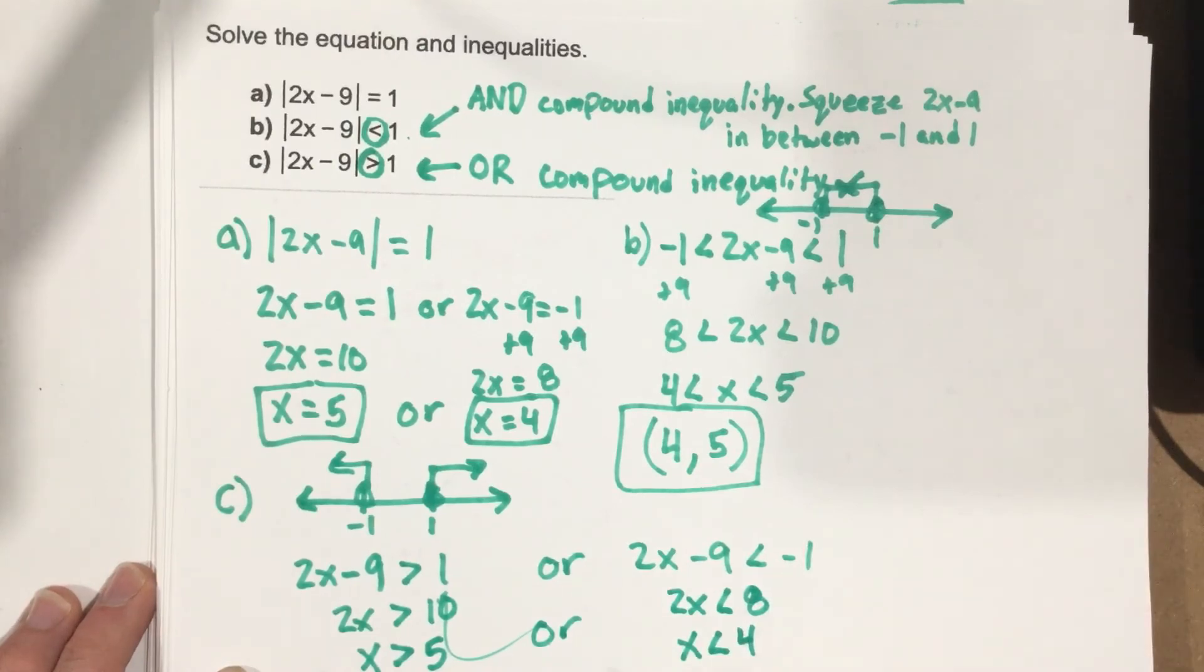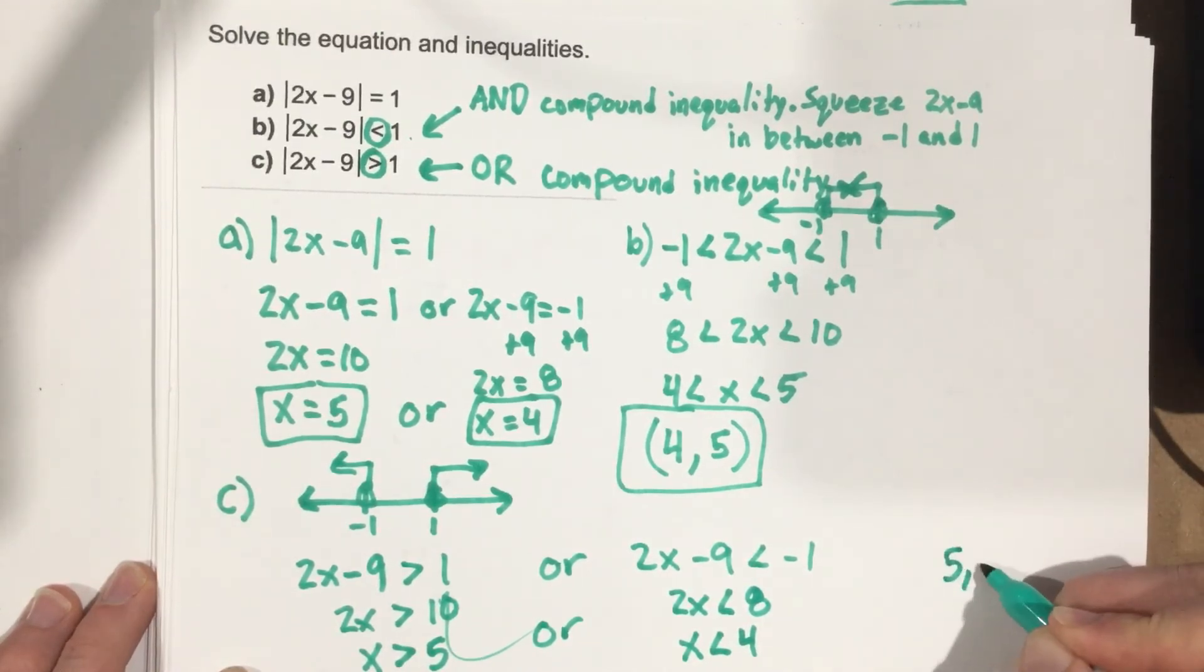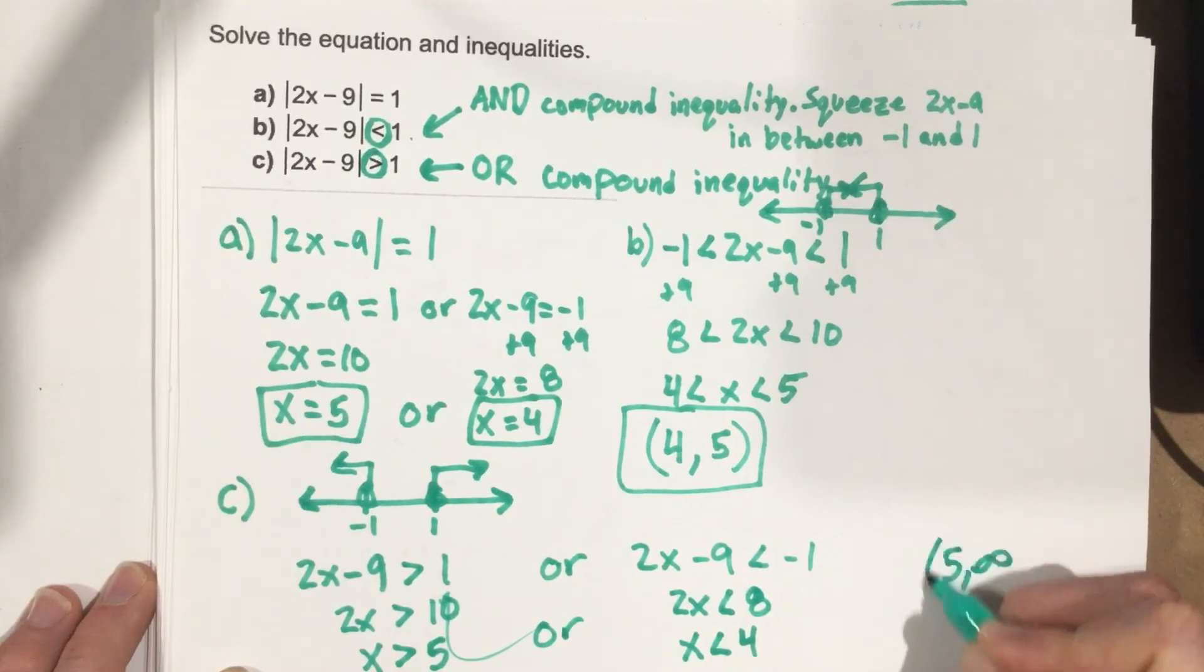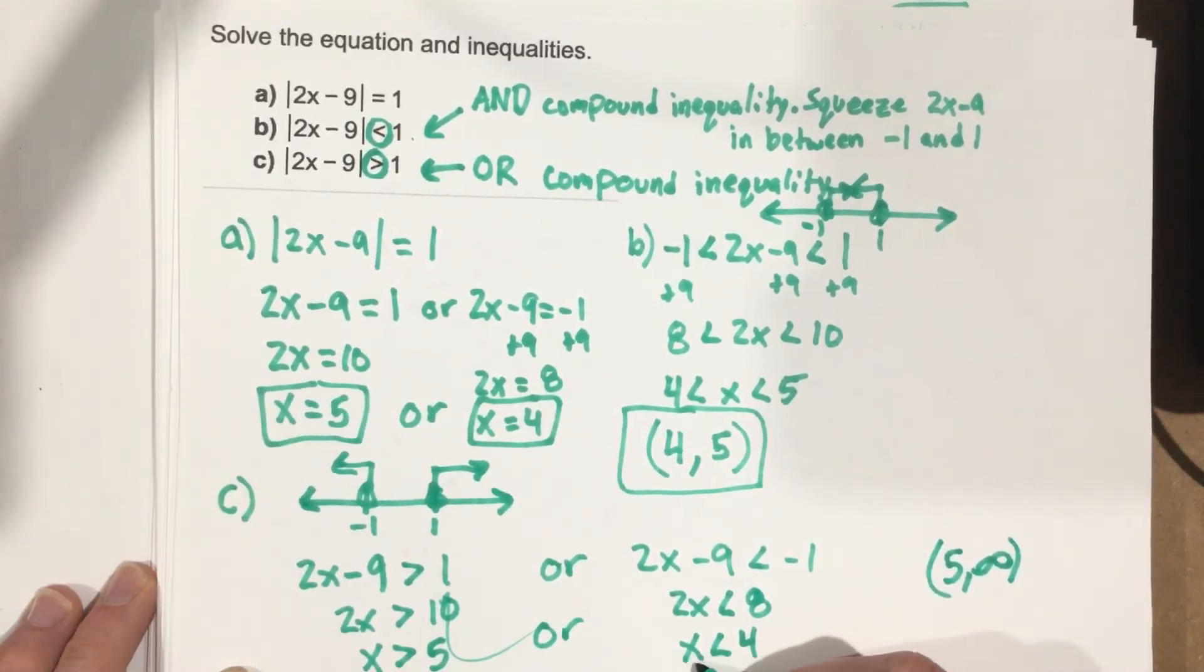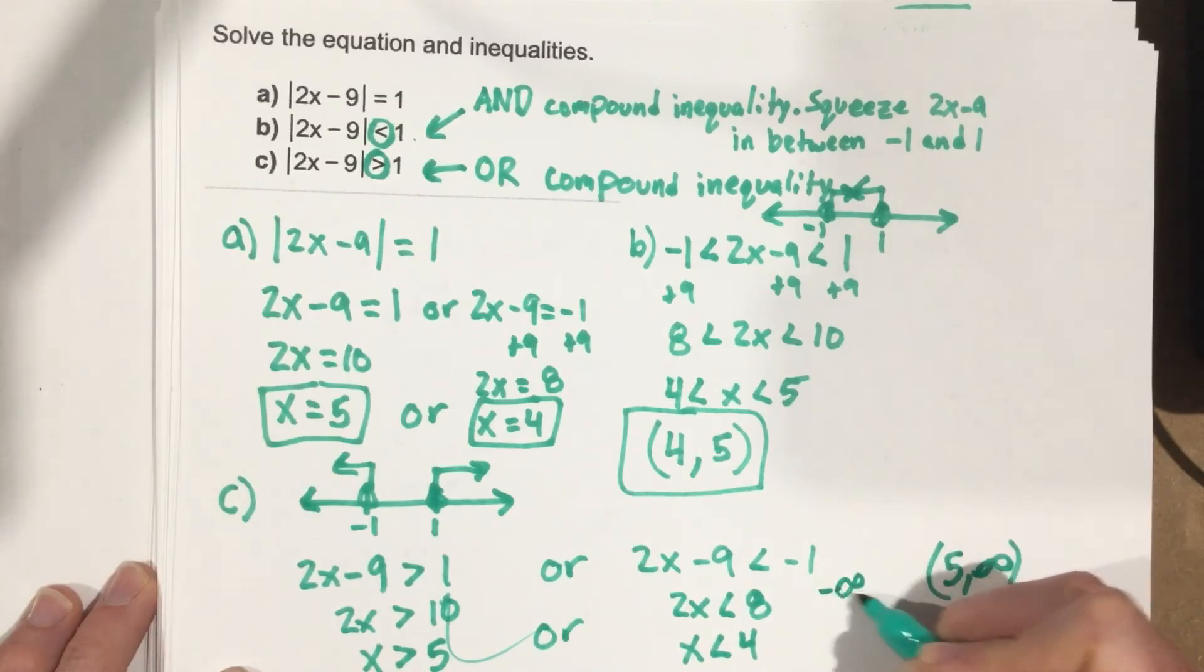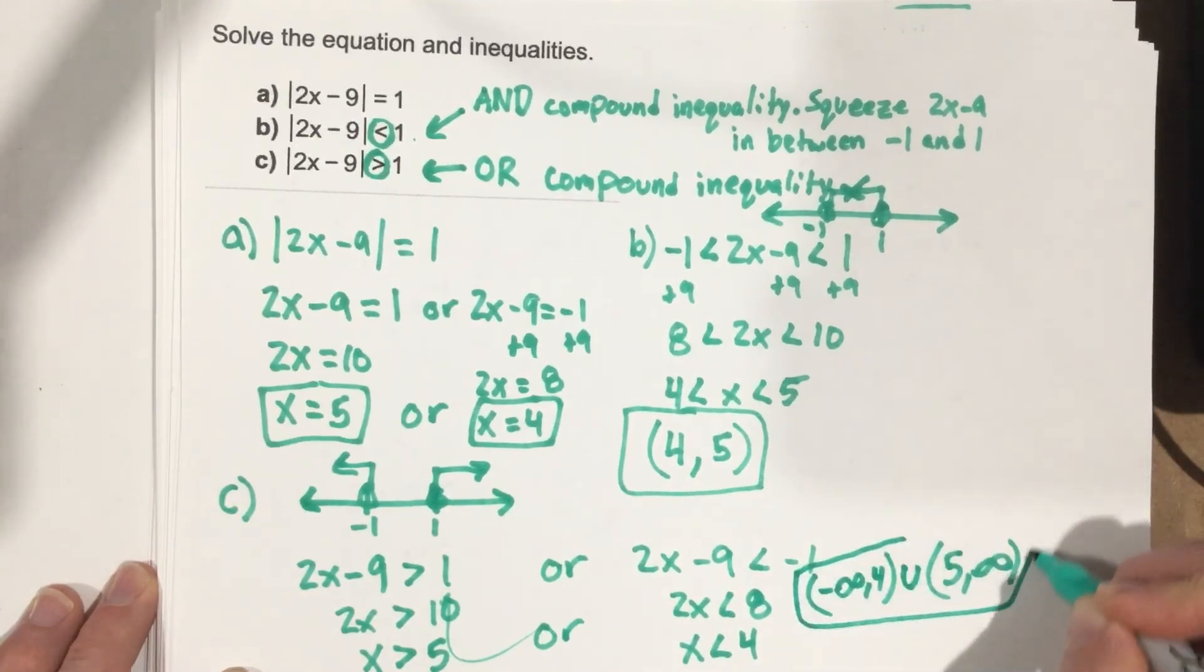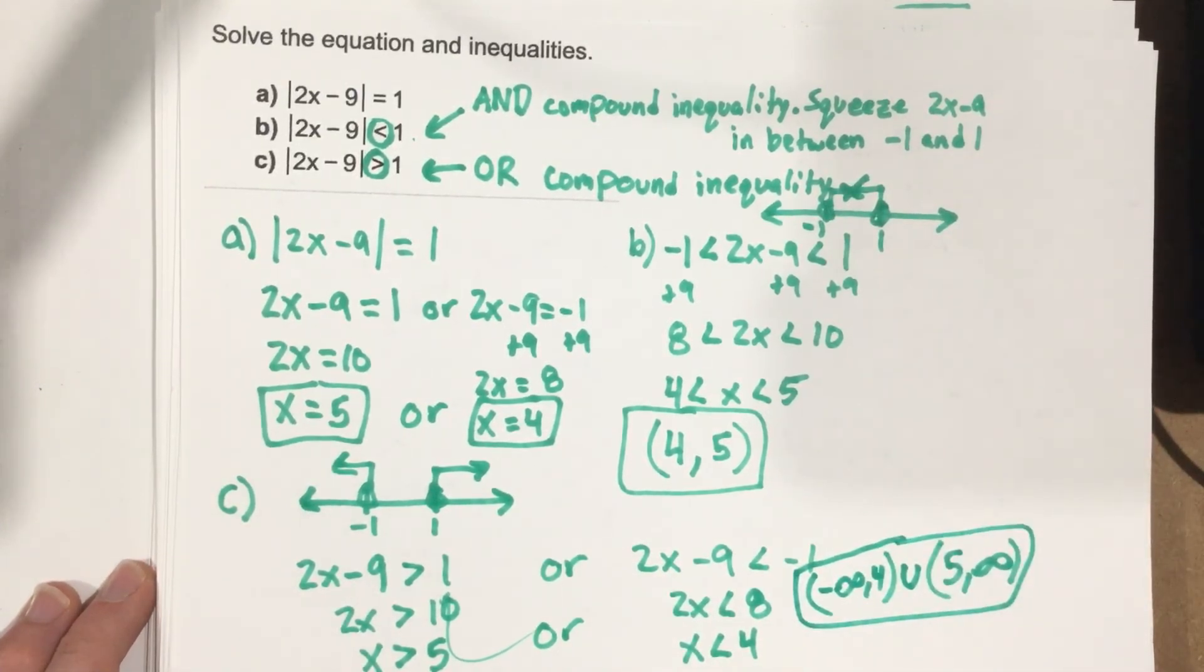So if we write this in interval notation, if x has to be greater than 5, that means we're going to go from 5 to infinity, parenthesis, parenthesis. And if x has to be less than 4, then we're going to go from negative infinity up to 4. And we'll use a union there, and that's our solution in interval notation. Hopefully that makes sense how we do those absolute value inequalities.